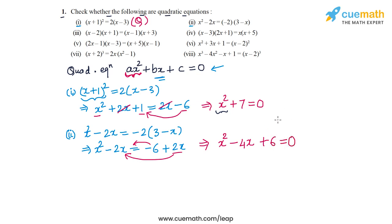So we get x² − 4x + 6 = 0. This is also a quadratic equation, so the equation in Part 2 is a quadratic equation.